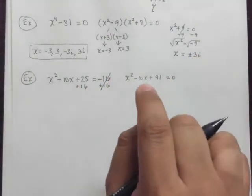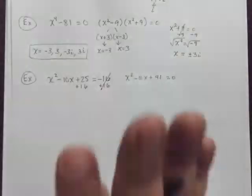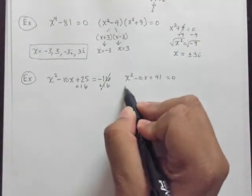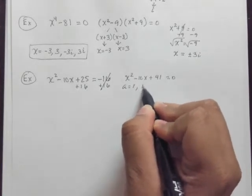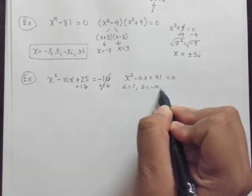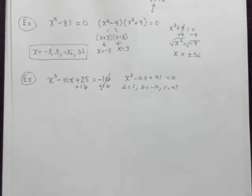41 is a prime number, so it has no such factors other than the 1 or 41. So no combination will be able to factor this. So when worst comes to worst, we always use the quadratic formula. a equals 1, b equals negative 10, and c equals 41. So let's go ahead and perform that operation there.